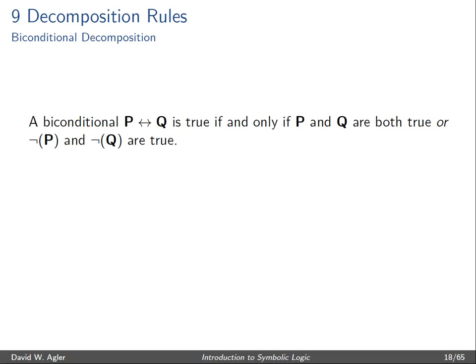A biconditional is true if and only if P and Q are both true, or not P and not Q are true. So this gives us two scenarios under which a biconditional can be true — it's true if and only if either P and Q are true, or not P and not Q are true.